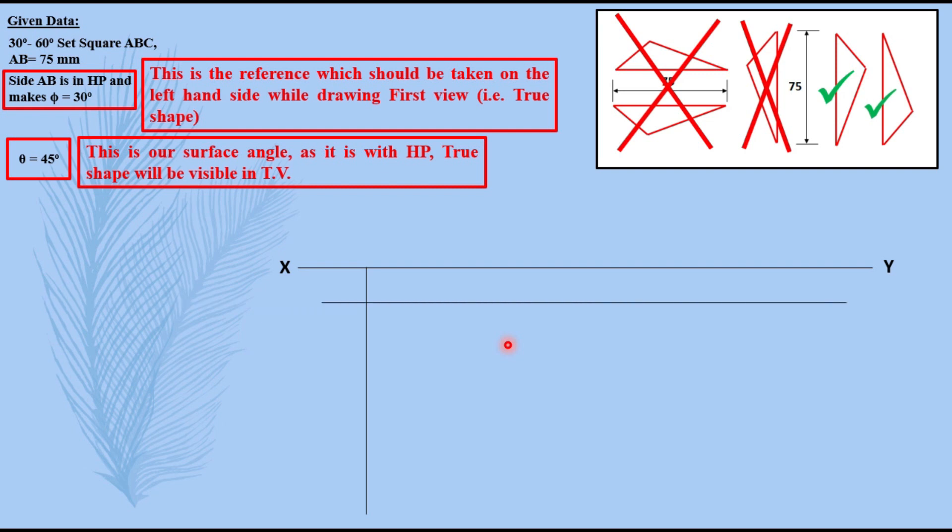So I have drawn a line. Now I have taken some distance. In the question this distance is not mentioned, how much in front this side is. It is not mentioned that any of the point is in VP. Unless something is given on VP, you are not allowed to have the top view on XY line. So this distance you can assume whatever you want. This is a 75 mm side which is given to us.